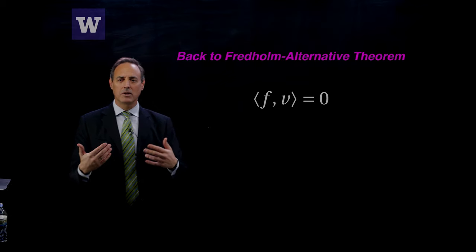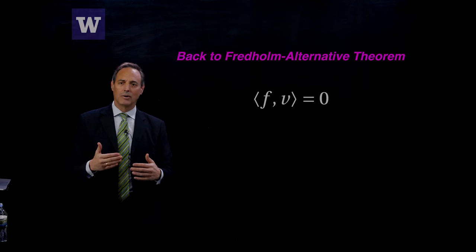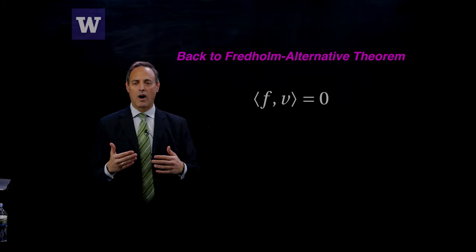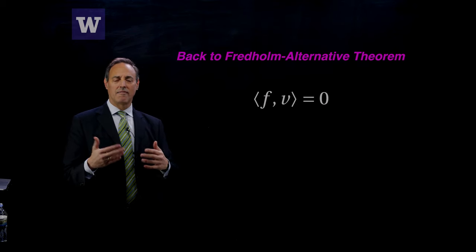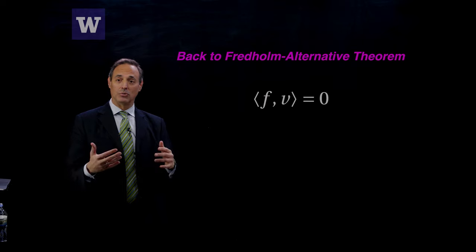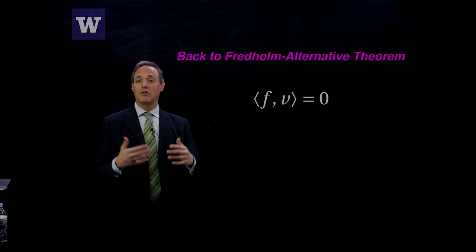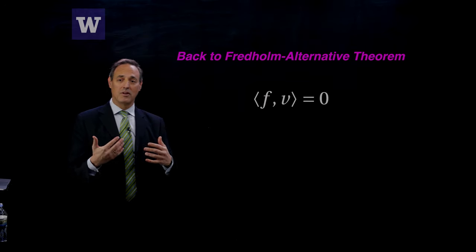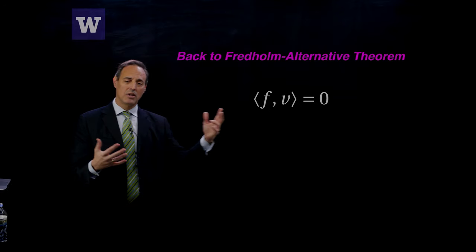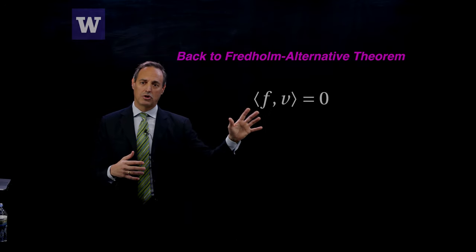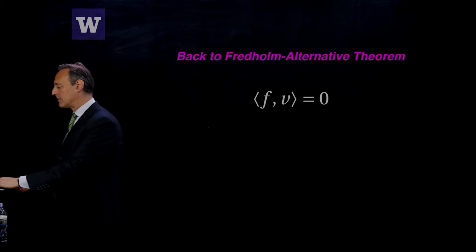Those are the two options: F can be outside of the range of the operator L, or you have this invariance which gives you an infinite number of solutions. It's very much like Ax equals b — when the determinant is zero, there are two options: no solution, or an infinite number of solutions. The same thing shows up when you're talking about these linear operators.